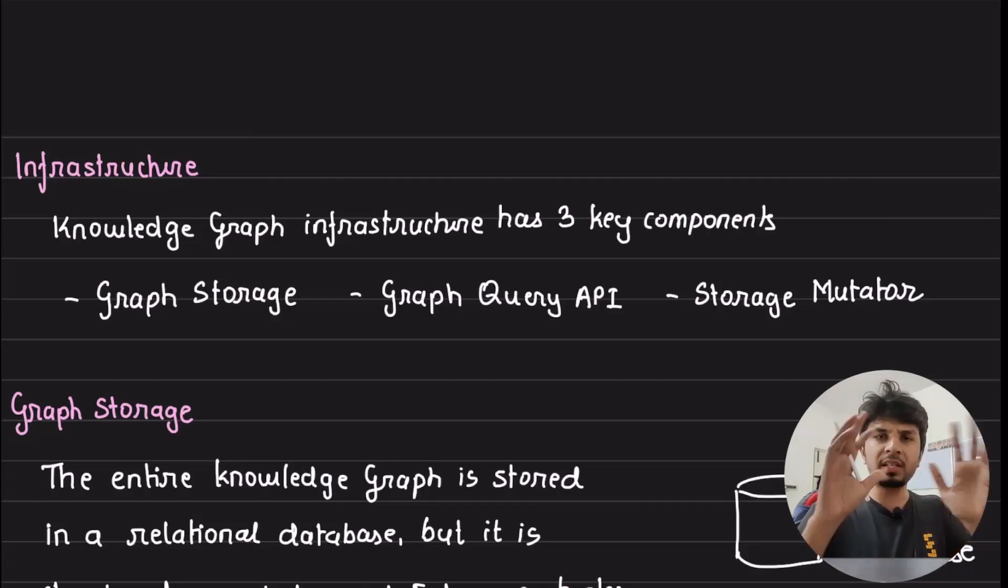Now, how is knowledge graph structured at Airbnb? So the key infrastructure components are specifically highlighted. First is the graph storage where they would be actually storing the knowledge graph. Second is graph query APIs through which your search service, planner service, and whatnot will be using or will be querying this graph storage to surface relevant information.